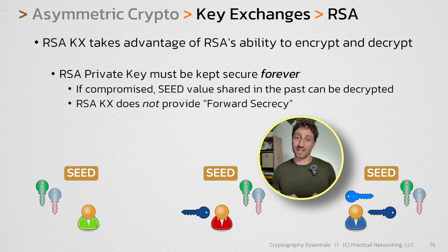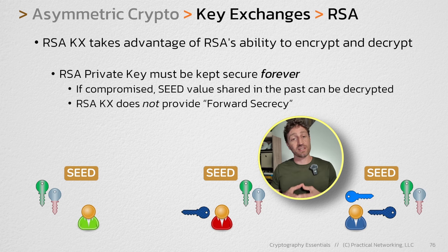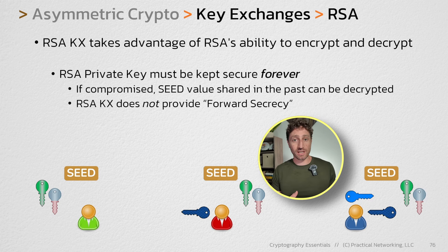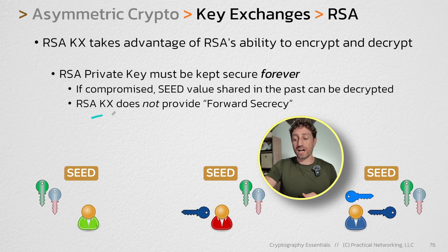There is another key exchange algorithm you can use that does provide forward secrecy, and that algorithm is Diffie-Hellman. We'll be talking about that next. As far as this lesson, the main takeaway is understanding how we can use RSA to facilitate doing a key exchange, and the fact that RSA does not provide forward secrecy.